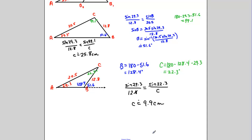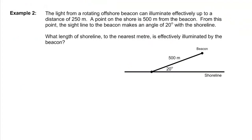And there you have it — that's an example of the ambiguous case with two different possible triangles. A lot of work, yes, but hopefully you get double the marks since there are two triangles to solve.